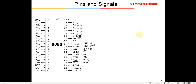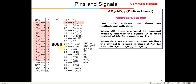The 8086 is a 16-bit processor that can handle both 8-bit and 16-bit operations. Pins D0 to D15 are the 16 data lines, which are bi-directional and used to transfer data to or receive data from memory, and to transfer or receive data from input/output ports. There are no separate address lines in 8086 — the same data lines are multiplexed and used for addressing as well.